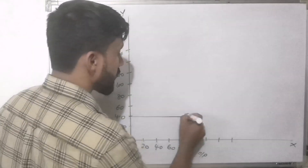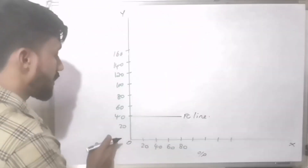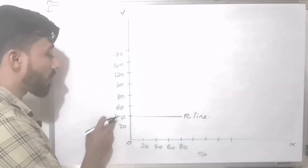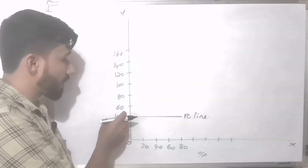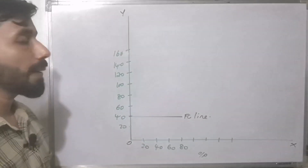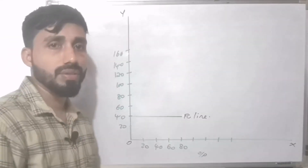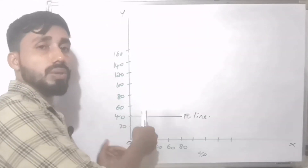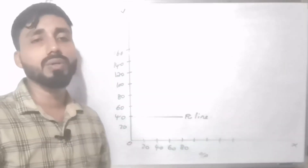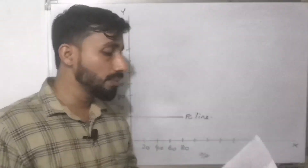When we plot the fixed cost starting from Rs. 4,00,000, the total cost line begins at Rs. 4,00,000 on the y-axis and rises. The y-axis shows values: Rs. 2,00,000, Rs. 4,00,000, Rs. 6,00,000, Rs. 8,00,000. The fixed cost line is drawn horizontally at Rs. 4,00,000.